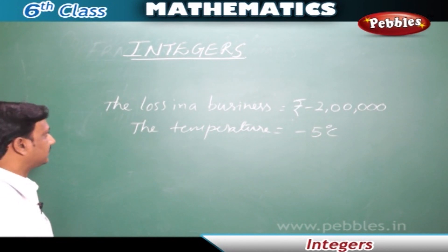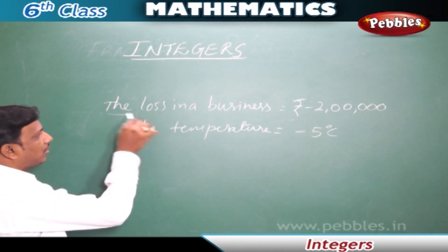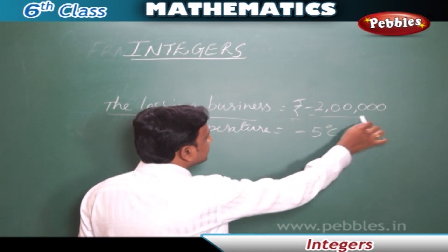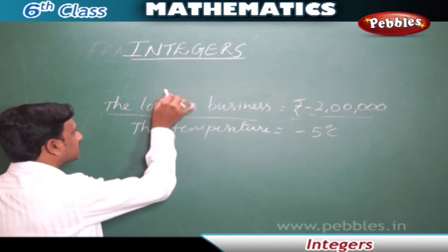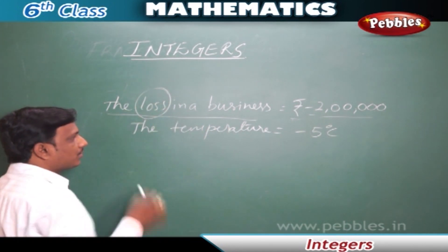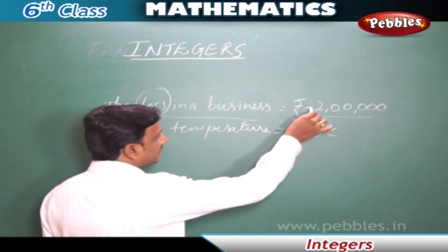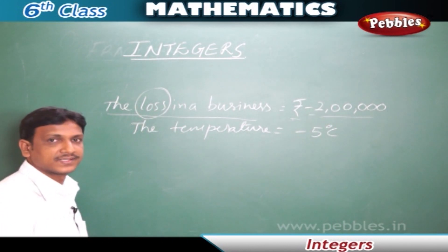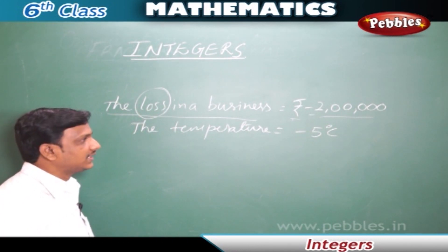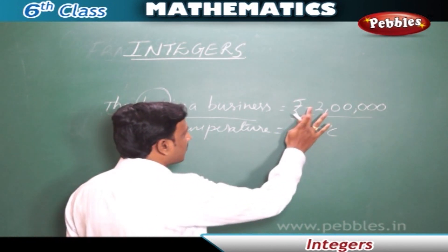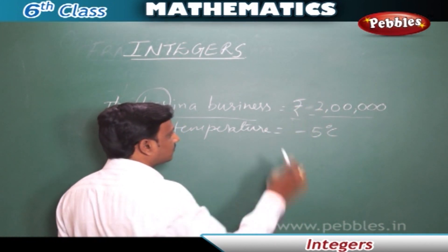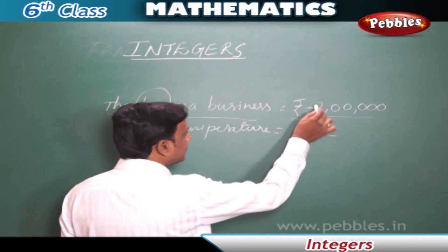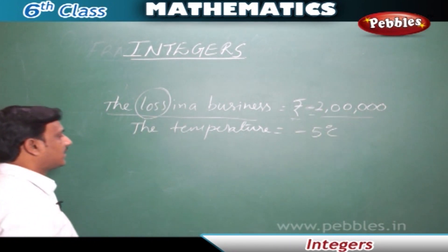Let us see some examples. The loss in a business is minus 2 lakhs. So, this is a loss, and we are writing it as a negative number. As it is a loss, we are writing it as a negative number. If it is a profit, we don't write the minus symbol. So, as it is a loss, we are writing it as minus 2 lakhs.